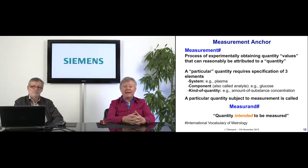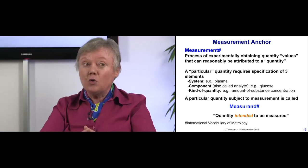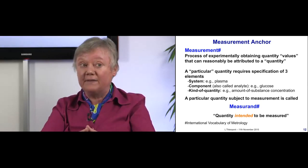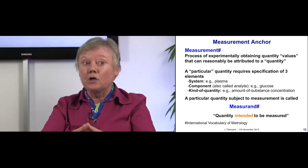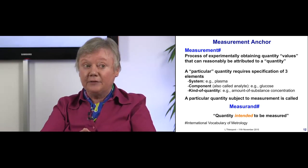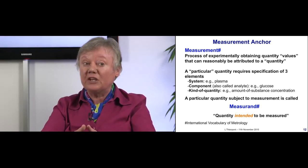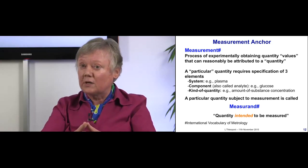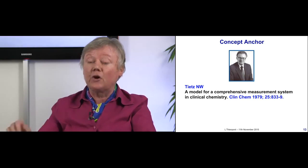The next anchor is the measurement anchor. In the VIM, a measurement is defined as the process of experimentally obtaining quantity values that can reasonably be attributed to a quantity. A particular quantity requires specification of three elements: the system, the component, and the kind of quantity — for example, plasma for the system, glucose for the component, and amount of substance concentration for the kind of quantity. In the VIM, a particular quantity subject to measurement is called the measurand, defined as the quantity intended to be measured — not the quantity that we measure, but the one intended to be measured for the diagnostic application.